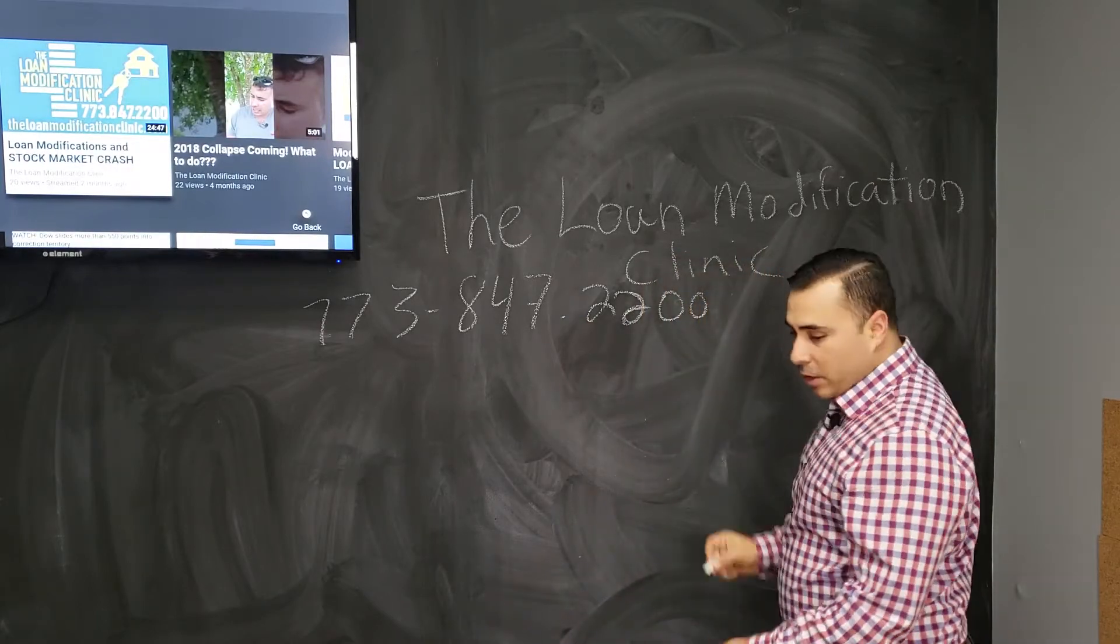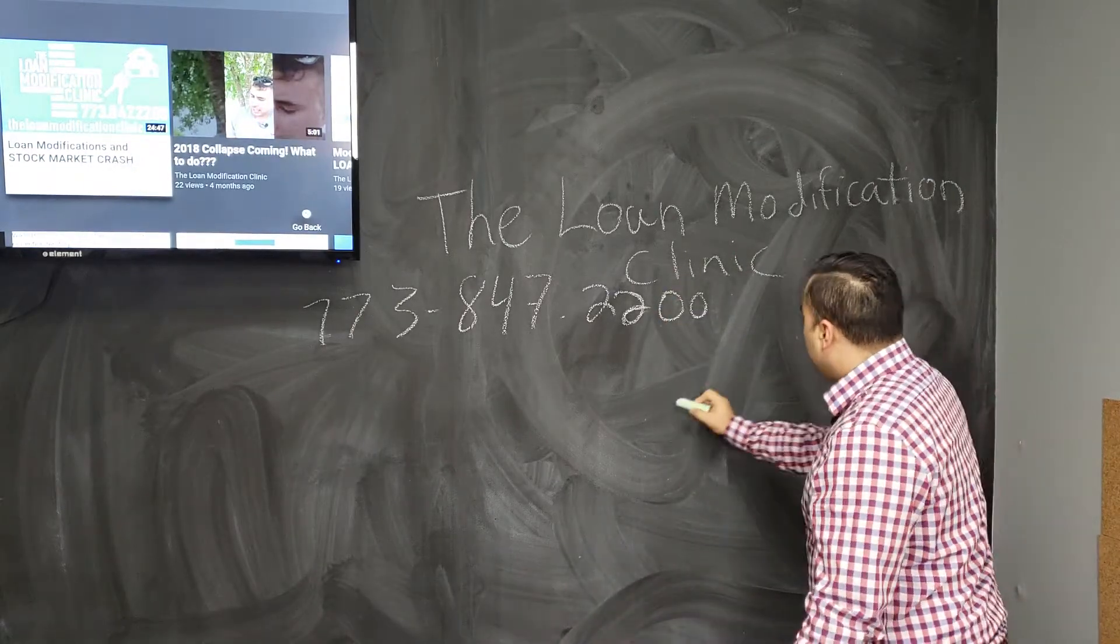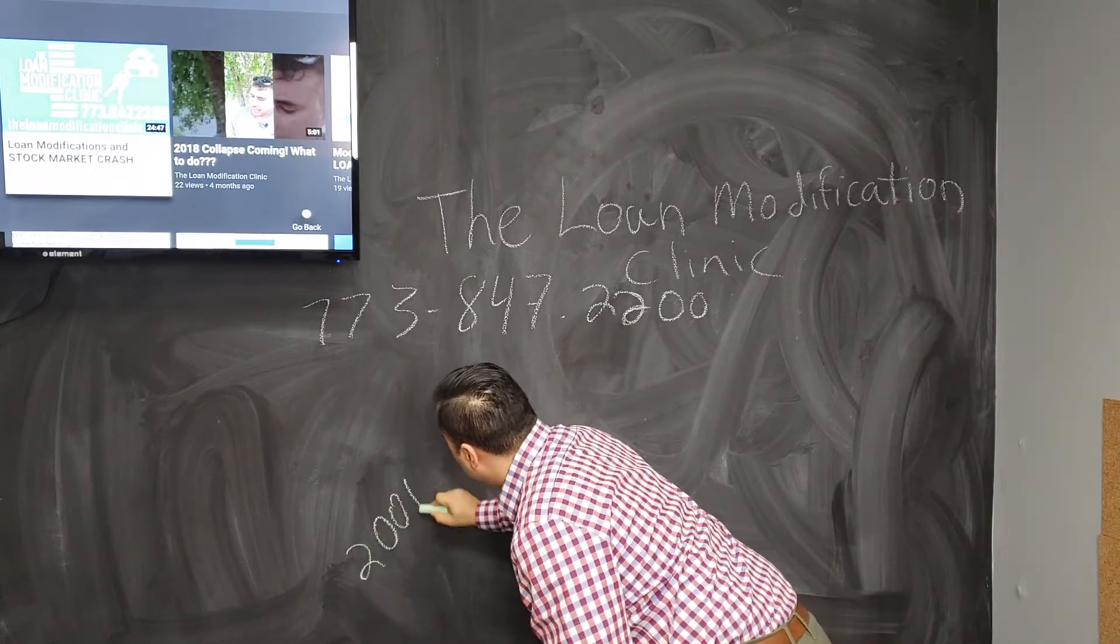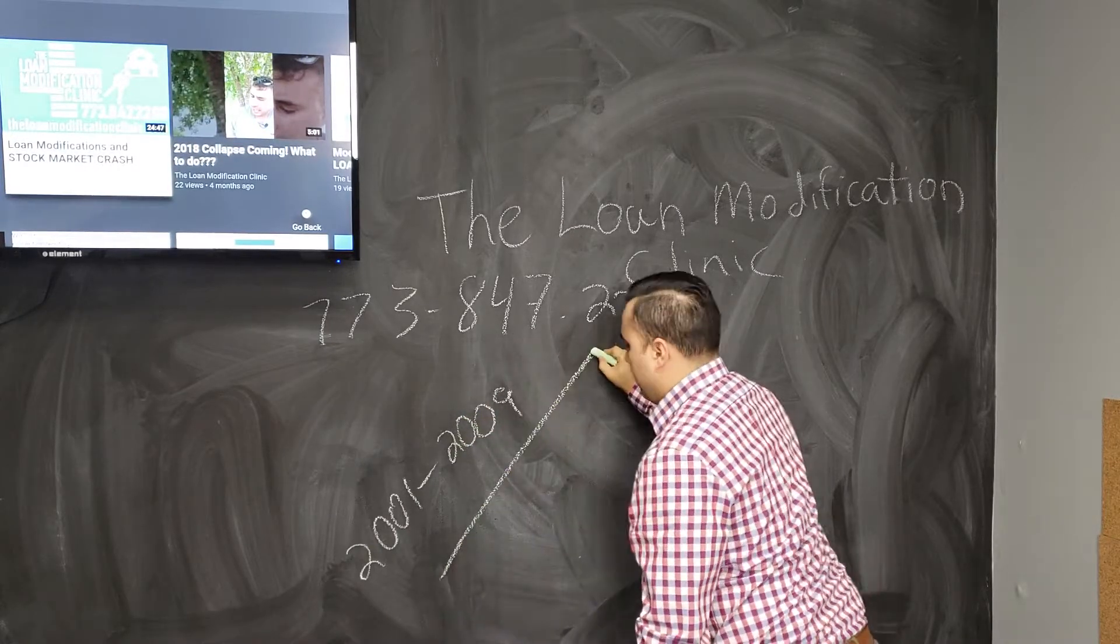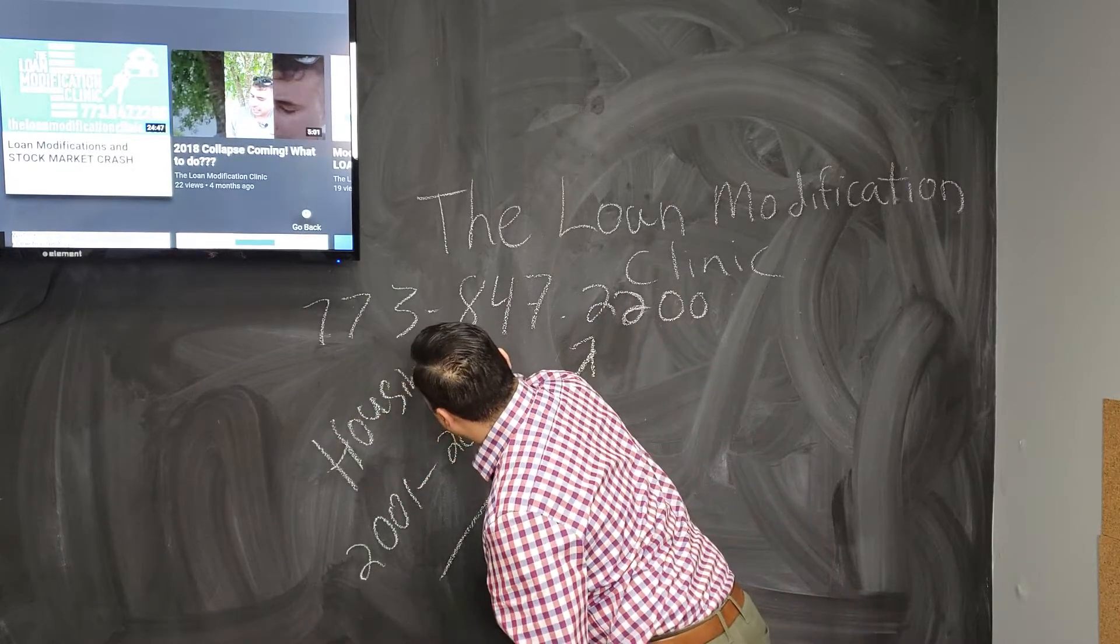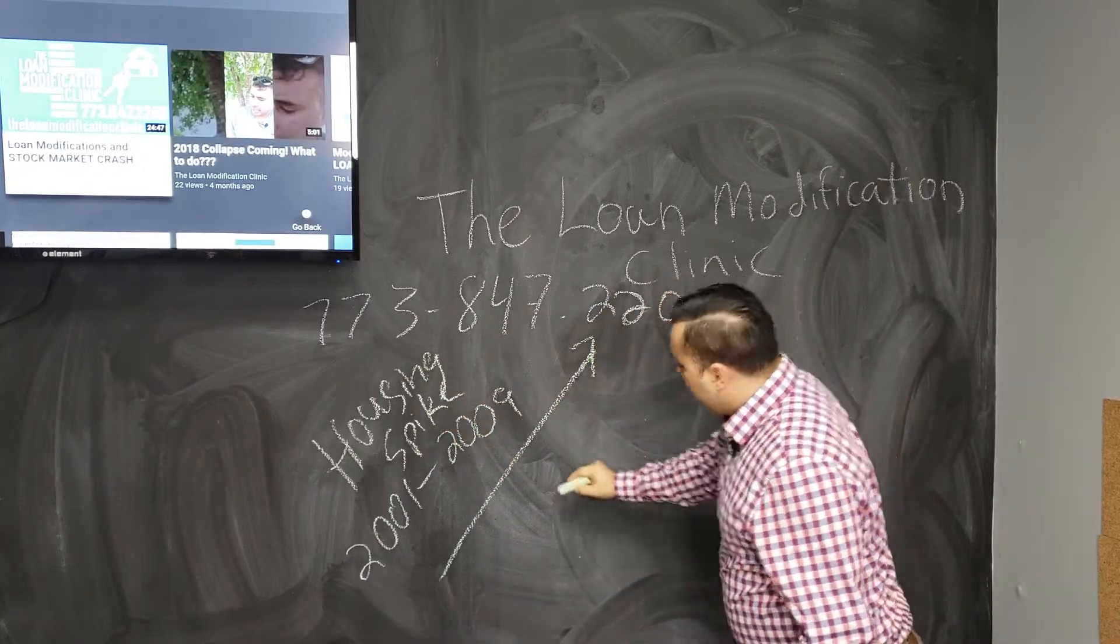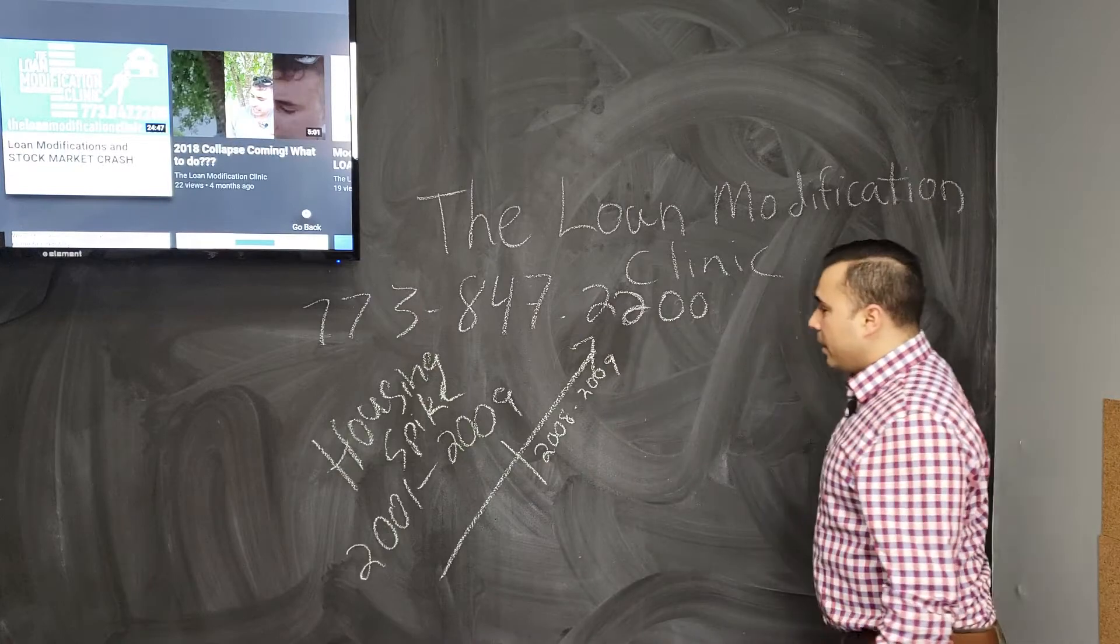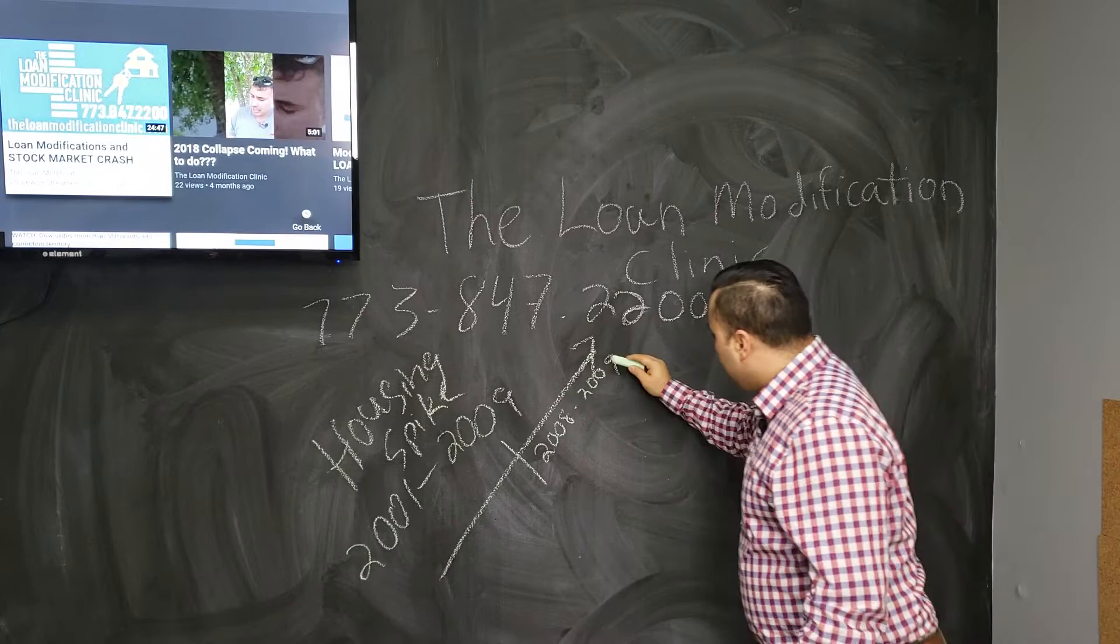What I talked about is, if you could see here, I'm actually going to use a green chalk. If you can see this line from 2001 to 2009, we had a housing spike. As the housing spike came in, we noticed there was an issue in 2008 to 2009. That's where we started to see an issue with the economy. Then we see the drop.